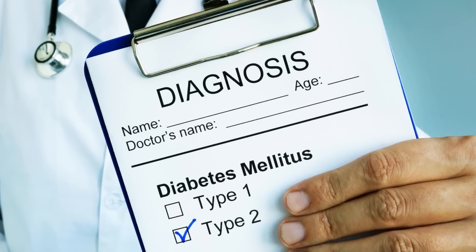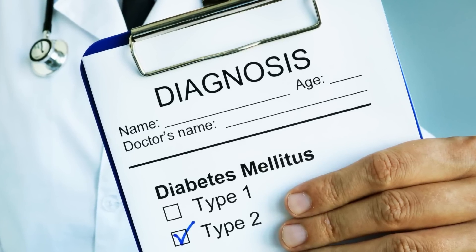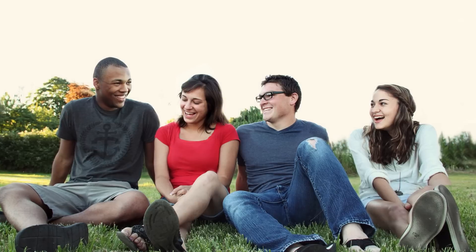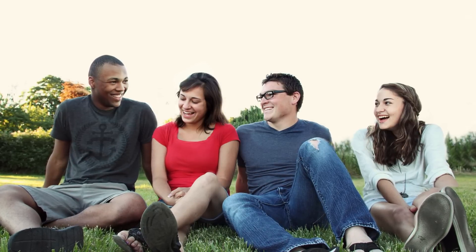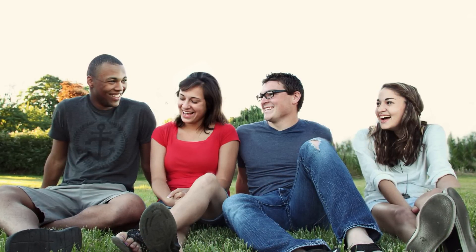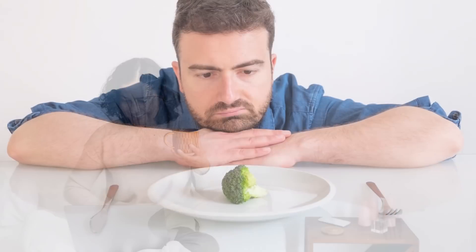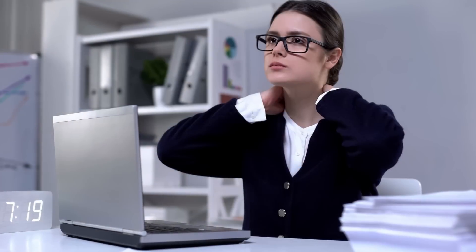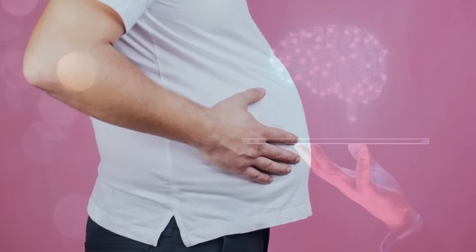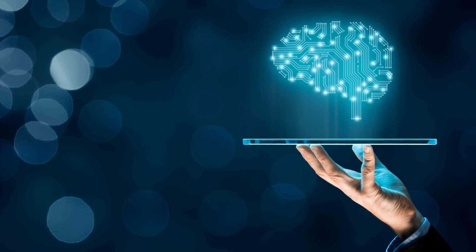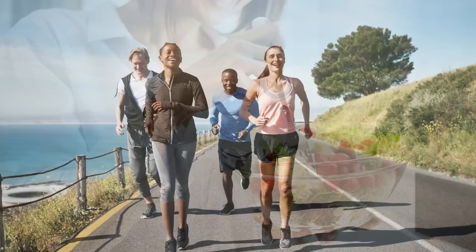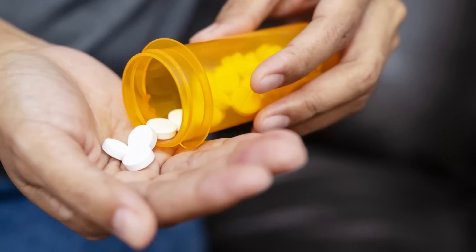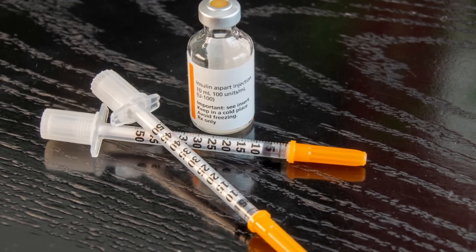Type 2 diabetes is more common and often develops in adulthood, although it can occur at any age. It is primarily influenced by lifestyle factors such as poor diet, sedentary lifestyle, obesity, and genetic predisposition. It can often be managed with a combination of healthy eating, regular exercise, oral medications, and sometimes insulin.